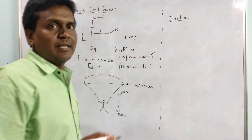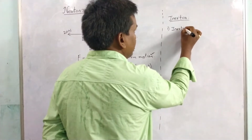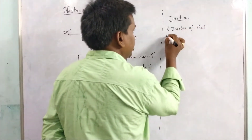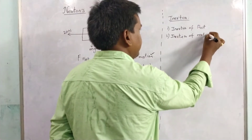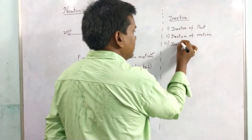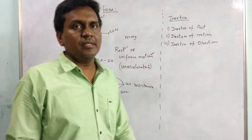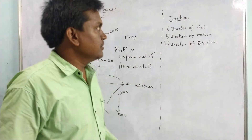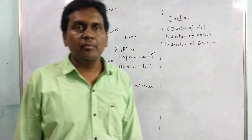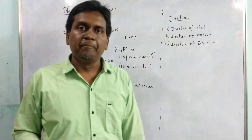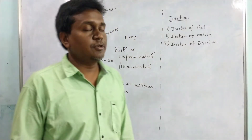Inertia is again of three types: first, inertia of rest; second, inertia of motion; and third, inertia of direction. Coming to the first type — inertia of rest — we can define it like this: the resistance offered by a body to oppose the change of state of rest of a body is called inertia of rest.